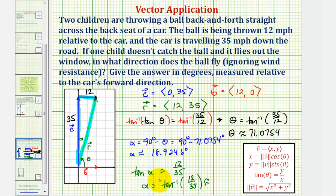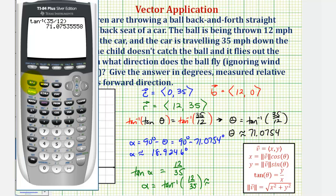Let's show this on the calculator. Second tangent, 12 divided by 35. Notice we get the same result much faster.